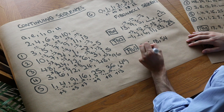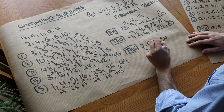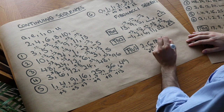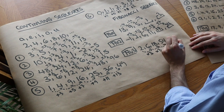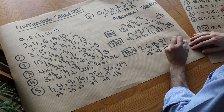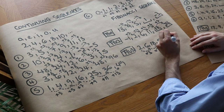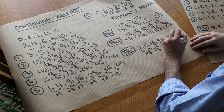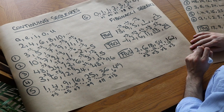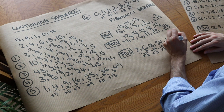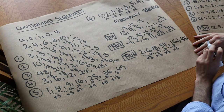For the third sequence, 2, 6, 18, 54: you're not adding the same amount each time, you're multiplying by 3 each time. So 54 multiplied by 3 gives 162, and 162 multiplied by 3 gives 486. Well done if you got those right!